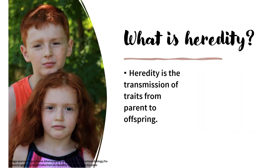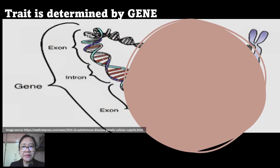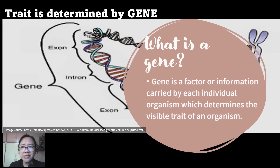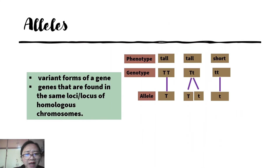What is heredity? Heredity is the transmission of traits from parent to offspring. Examples of traits transmitted from parents to offspring are color of the skin, shape of face, height, hair types, and many more. A trait is determined by a gene. A gene is a factor or information carried by each individual organism which determines the visible trait of an organism. A single gene can have several variants called alleles. Alleles are variant forms of a gene found in the same loci or locus of homologous chromosomes.